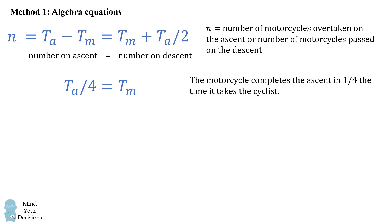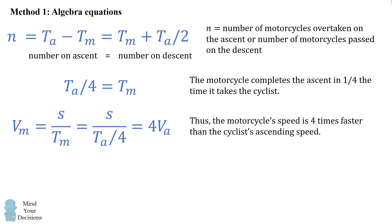In other words, the motorcycle completes the ascent in one fourth the time it takes the cyclist. Consequently, we can solve that the motorcycle speed is equal to 4 times that of the cyclist speed on the ascent.